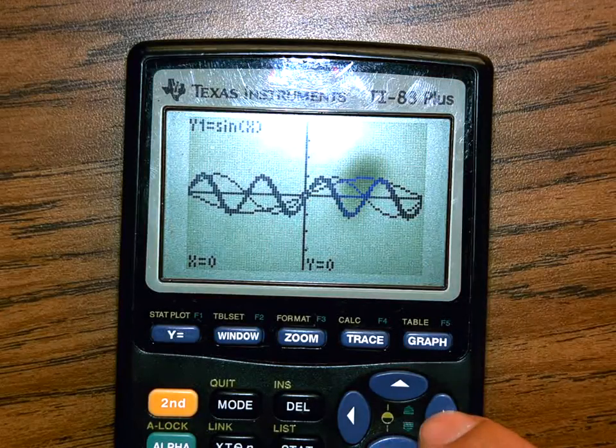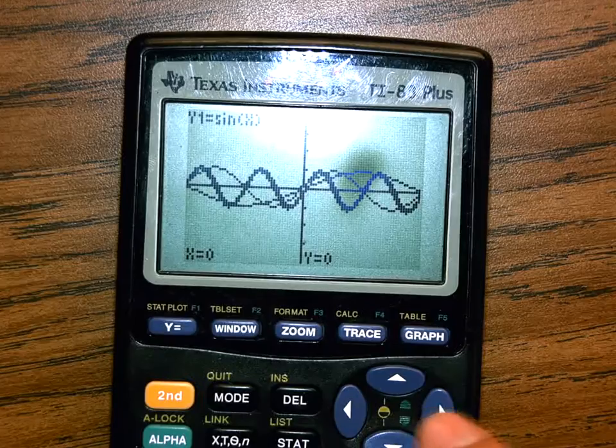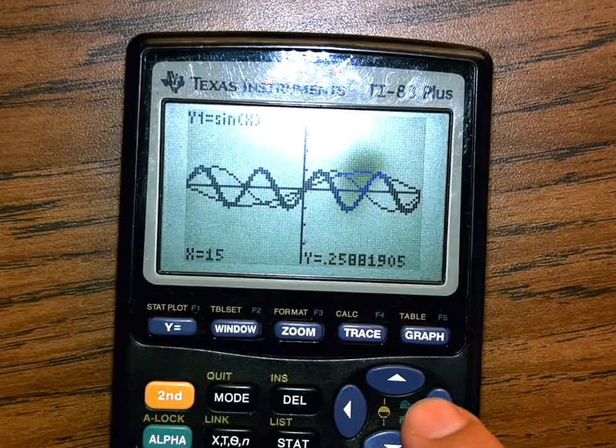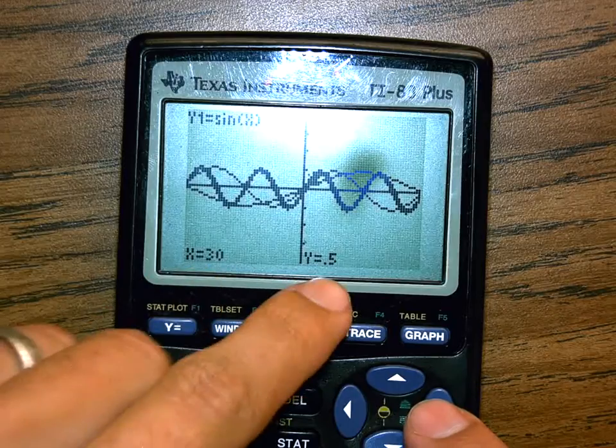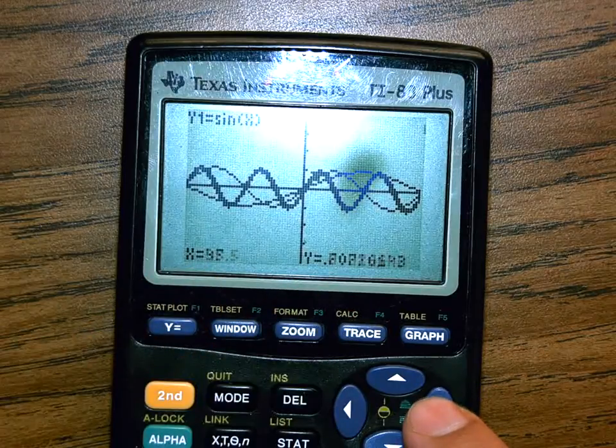So if I press the right button on my little graph here, as I enter in different values of x, when x is 30 degrees, the sine is half, just like we did that table.